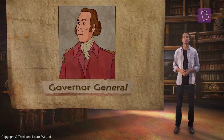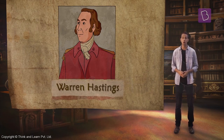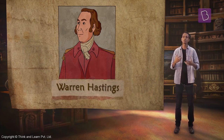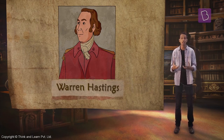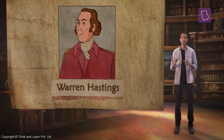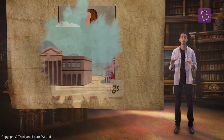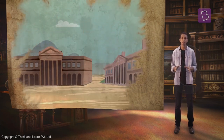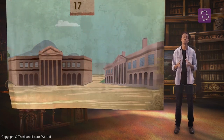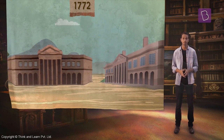The first governor-general was Warren Hastings, who tried to reform the justice system. A new system of justice was introduced in 1772.